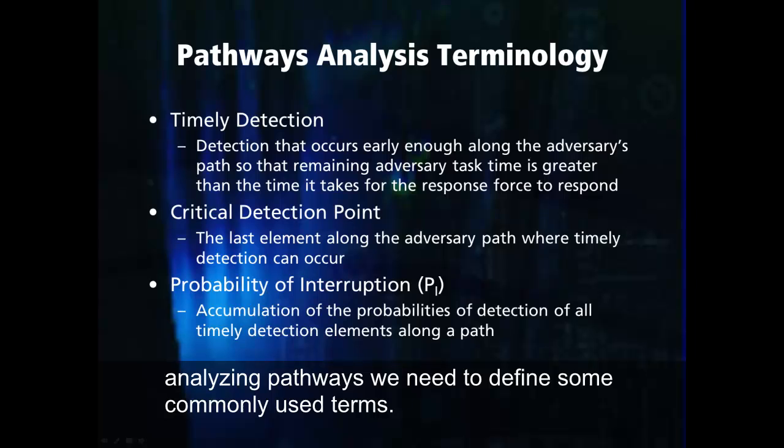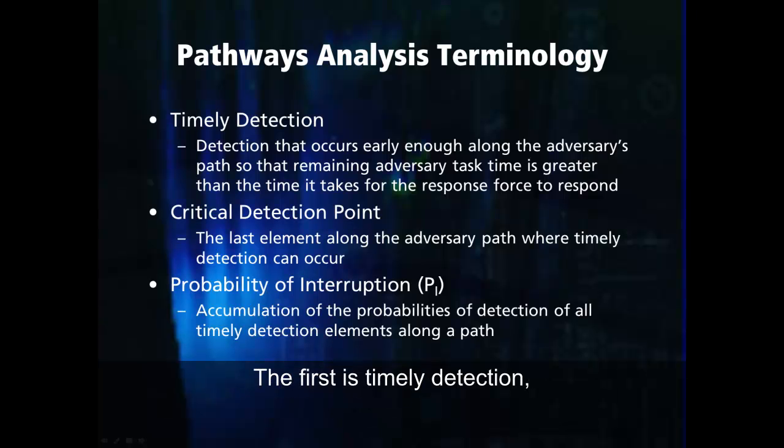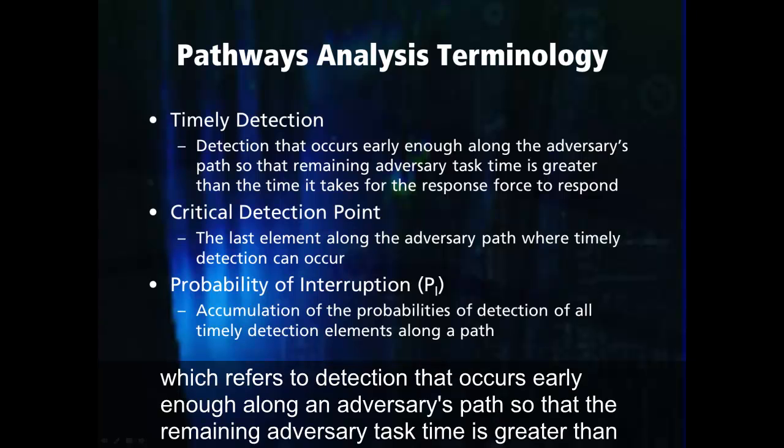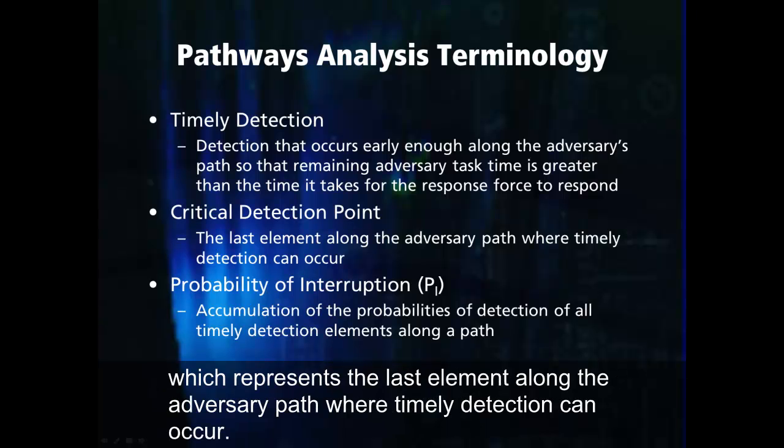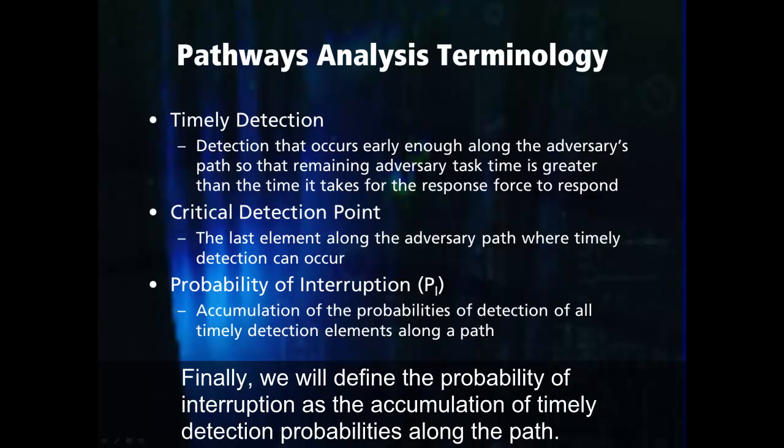Before we get into analyzing pathways, we need to define some commonly used terms. The first is timely detection, which refers to detection that occurs early enough along an adversary's path so that the remaining adversary task time is greater than the time it takes for the response force to respond. Another term is the critical detection point, which represents the last element along the adversary path where timely detection can occur. Finally, we will define the probability of interruption as the accumulation of timely detection probabilities along a path.